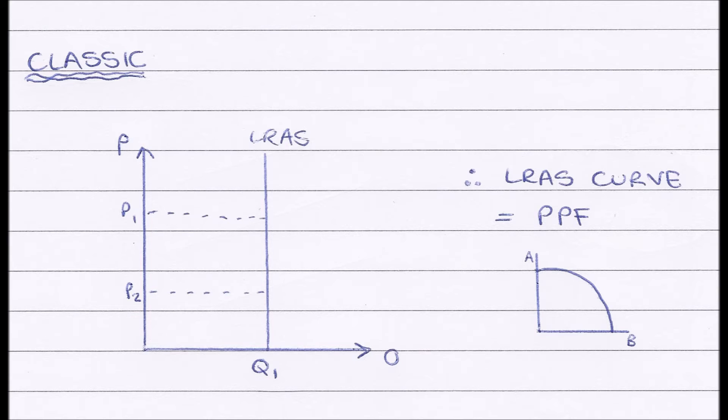This means that our long-run aggregate supply curve is equivalent to working on the PPF. If you remember, when working on the PPF, we couldn't physically produce any more—we were working at maximum efficiency. That's what the long-run aggregate supply classic curve shows: we can't work any more because it's fixed at this level of output, and we're working at maximum efficiency.